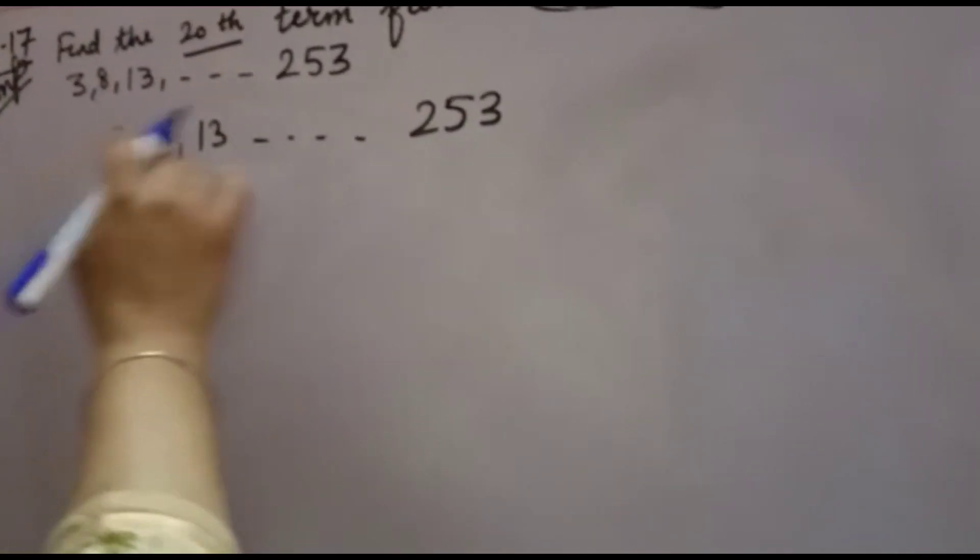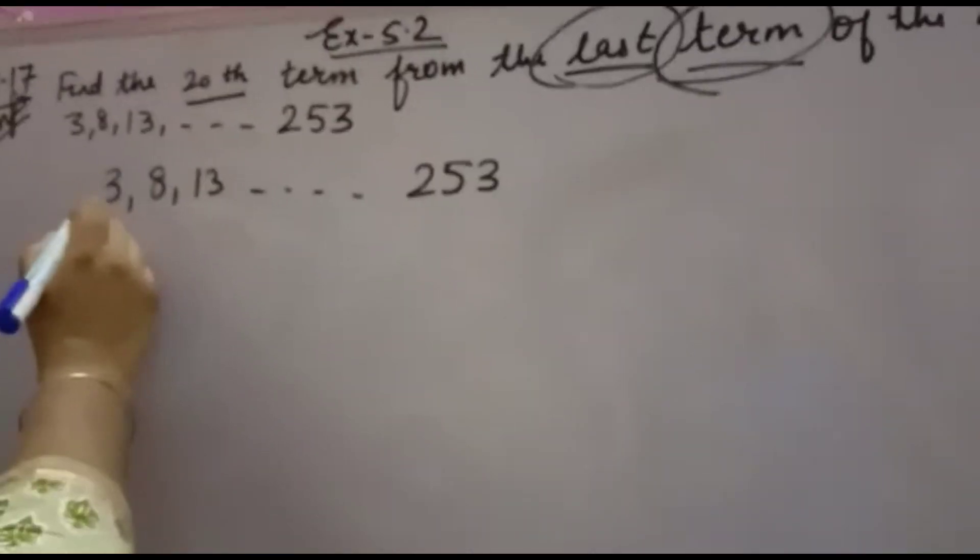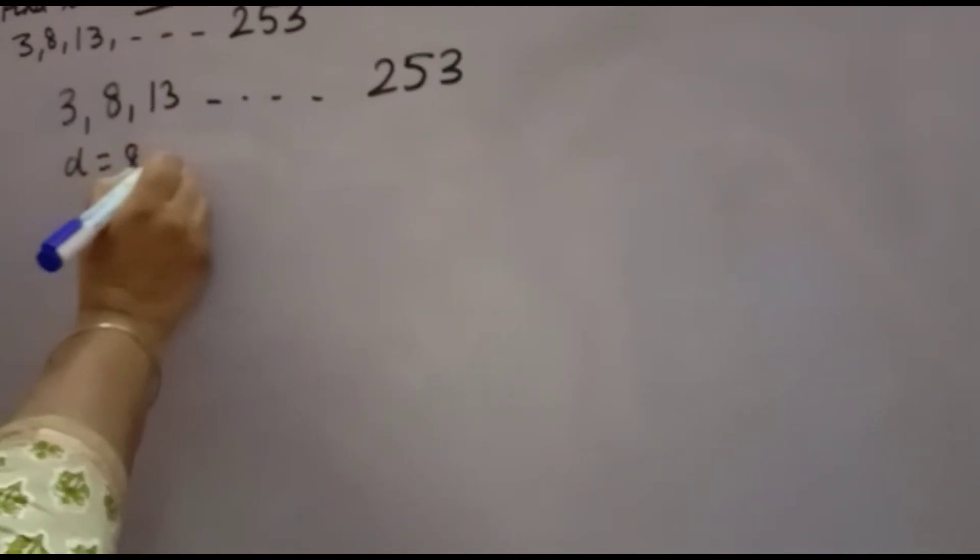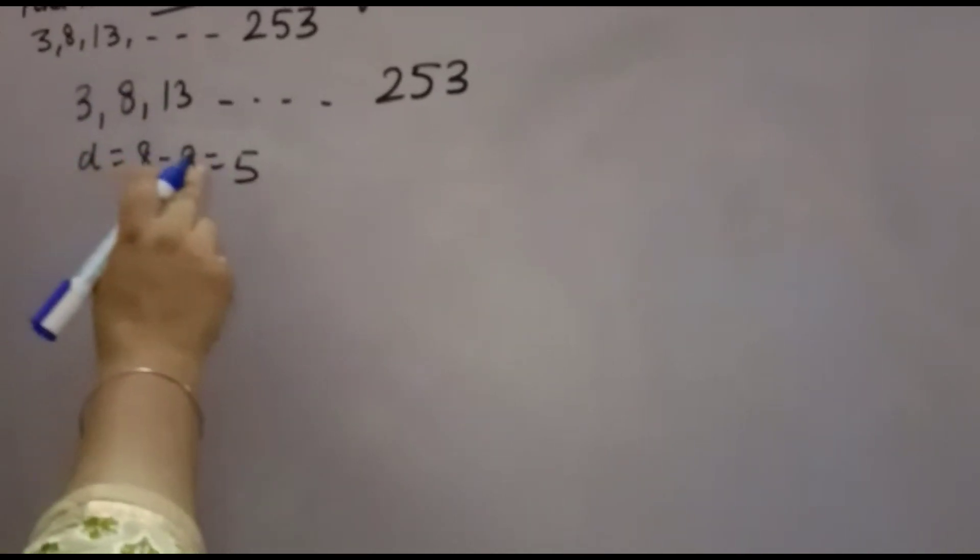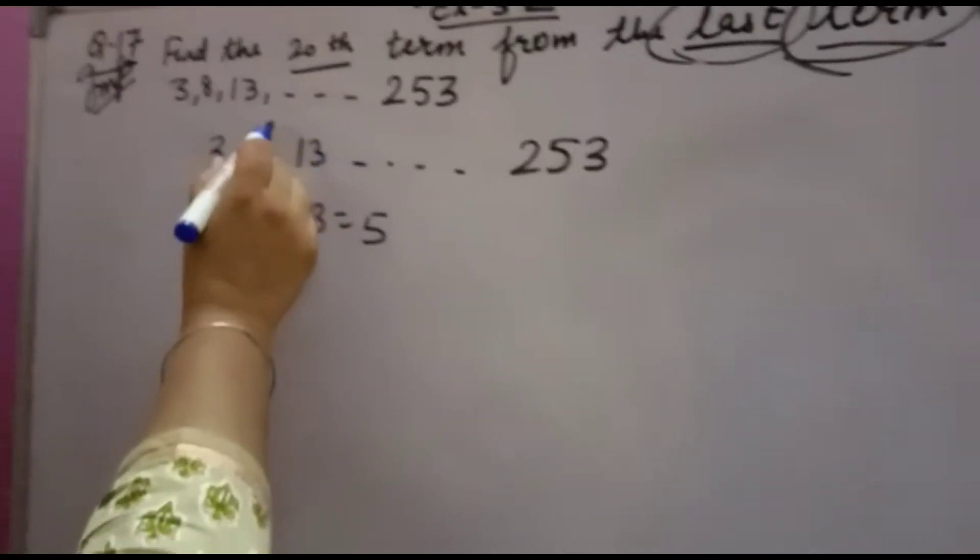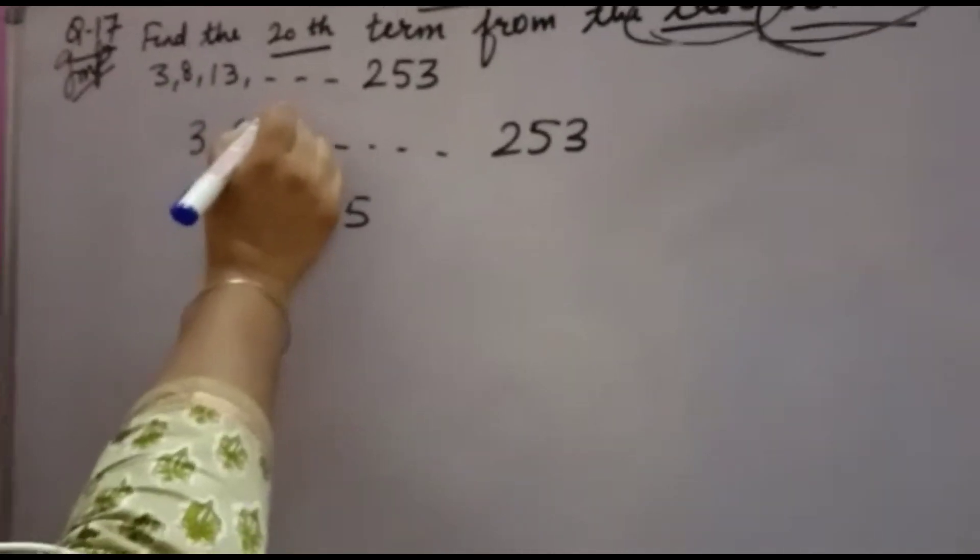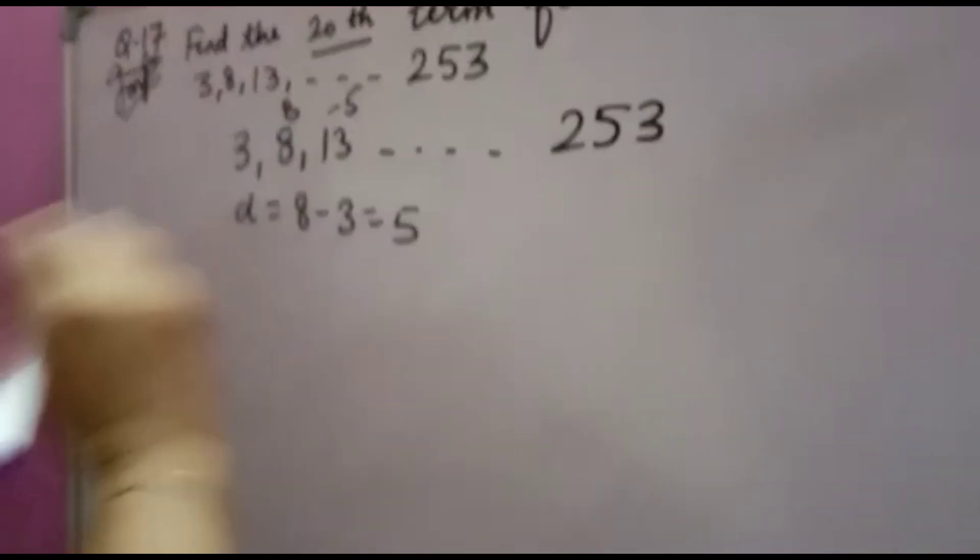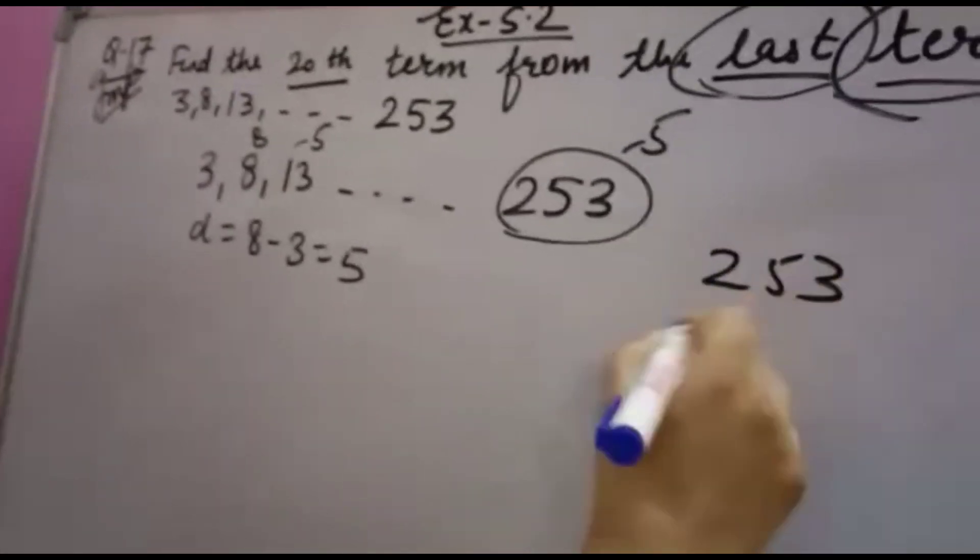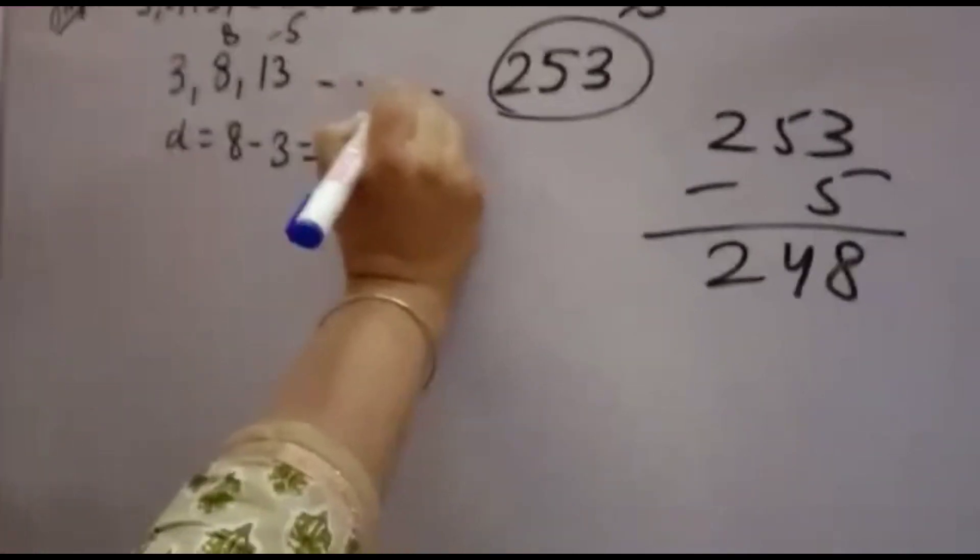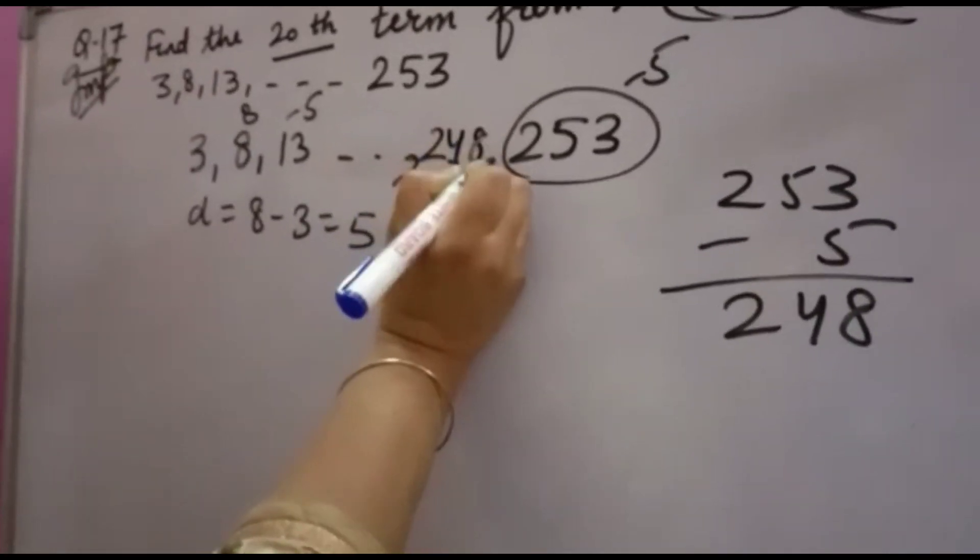If this is the series, you have to find the 20th term from last, you can reverse the series. But before reversing, you see 3 plus 5 is 8. That means D is 8 minus 3, that is 5. 13 minus 8 is also 5. If you subtract 5 from 253, you get 248. Second last term is 248. This is the important step.